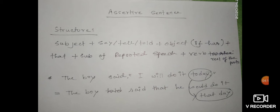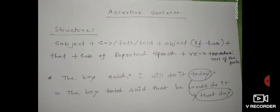Now you are going to learn how we can change a sentence from direct to indirect speech. I have already shown you a couple of examples. For example: 'The boy said, I will do it today.' In indirect speech: 'The boy said that he would do it that day.' Here 'today' becomes 'that day.' The structure is: subject + said/told + object (if any) + that + subject of reported speech + verb + rest of the sentence.